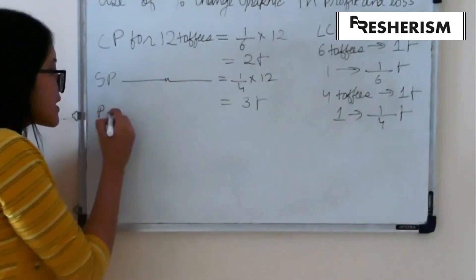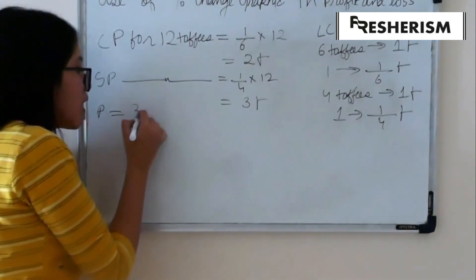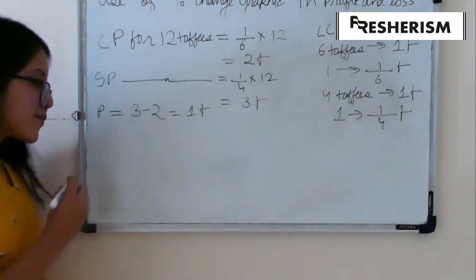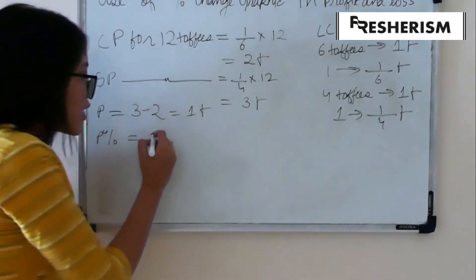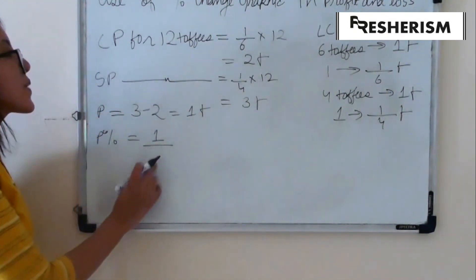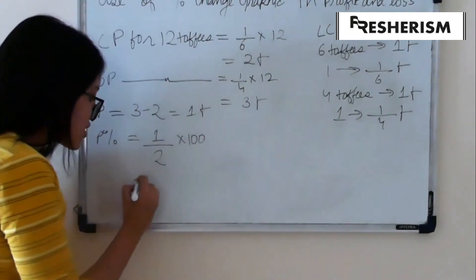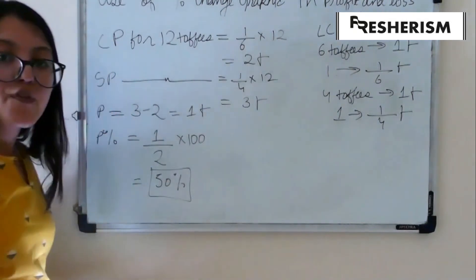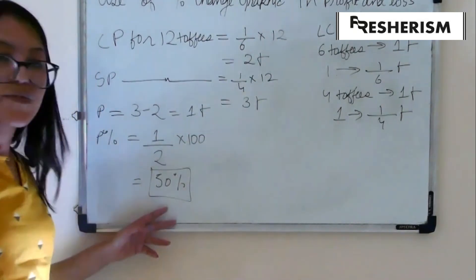Now, our profit is equal to selling price minus cost price. Therefore, 3 minus 2 gives us 1 rupees. To find profit percentage, we use our previous formula, which was profit, which is 1 rupee over here upon cost price, which is 2 rupees over here into 100, which gives us 50% as our answer. Therefore, the total profit that the person incurred was 50%.